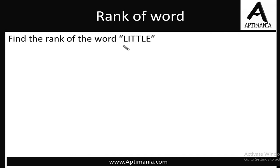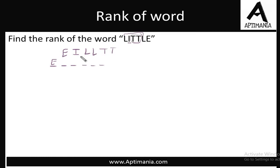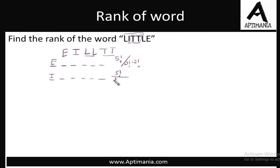Now taking the word Little. Here two letters repeat twice: L appears two times and T also appears two times. We arrange the letters in alphabetical order: E, I, L, L, T, T — six letters. We start with E — E is not required. We make the remaining words: 5 factorial divided by 2 factorial divided by 2 factorial, because L repeats twice and T also repeats twice. Next is I — also not required, so again 5 factorial divided by 2 factorial divided by 2 factorial.